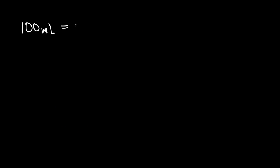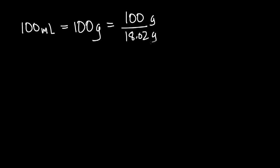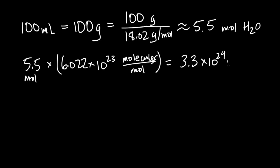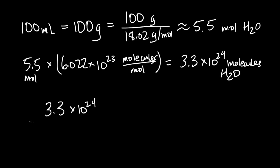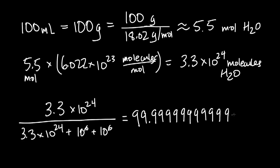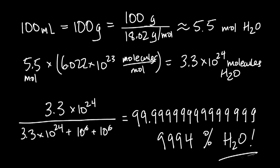100 milliliters of water is 100 grams of water, which is 100 over 18.02 — about 5.5 moles of water. That means there are about 3.3 times 10 to the 24 molecules of water in that beaker, and only 10 to the 6 molecules of each reactant. So in any given volume of this solution, 99.999999999999999999994 percent of molecules are non-reactive water. Clearly, successful collisions between the reactants would be very rare in this situation.